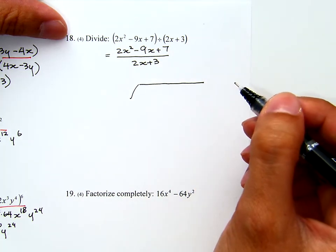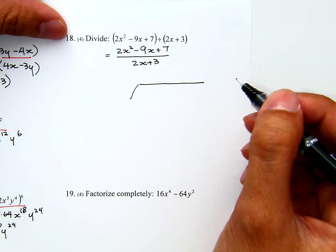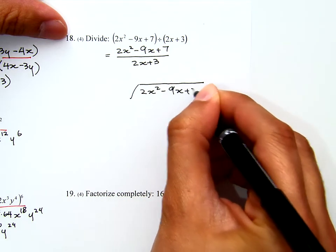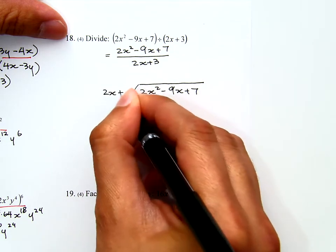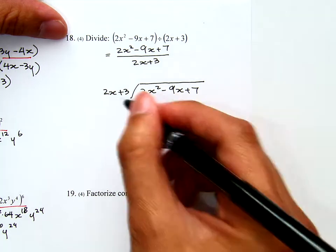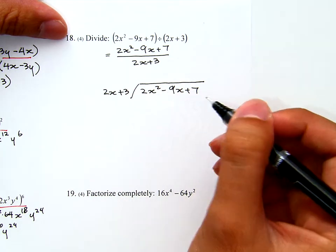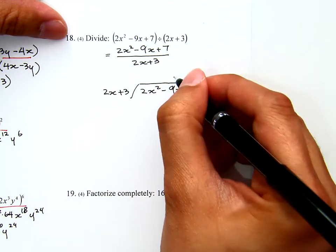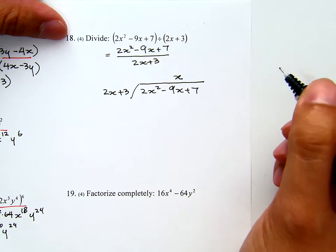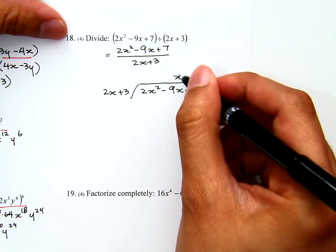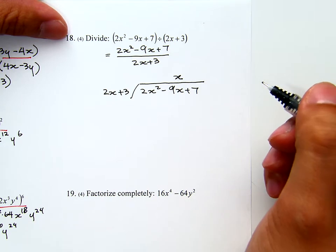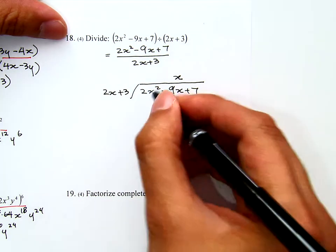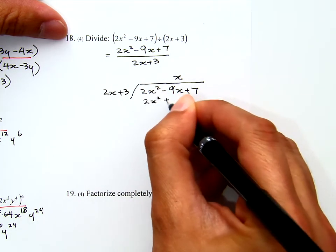This is the only way we can do this problem at this point. I will have 2x squared minus 9x plus 7 divided by 2x plus 3. Now, 2x goes into 2x squared how many times? 2x times what gives us 2x squared is by x. I write that x above that negative 9x because of the place value, and then I will distribute x by those two. That will get 2x squared plus 3x.